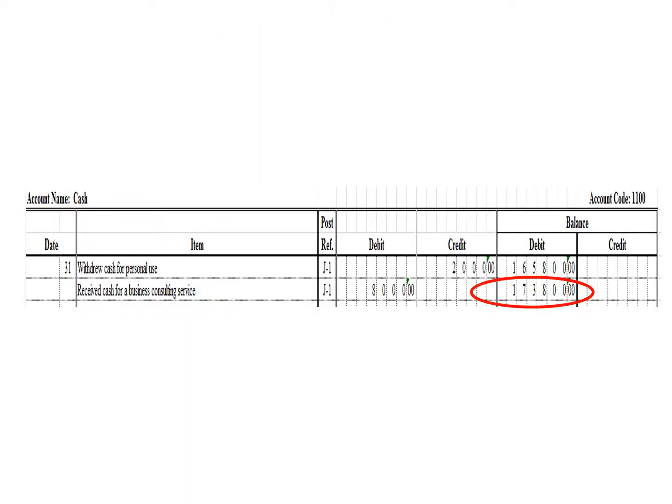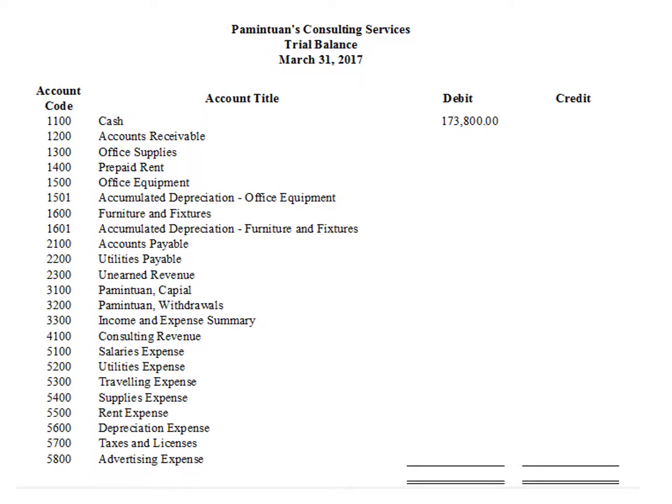To complete our trial balance, we need the balance of each account. Where can we get the balance of each account? Yes, correct — from their respective ledgers. Let us start with the cash ledger. As of March 31, the balance of the cash ledger is P173,800 debit. We write the corresponding balance of the cash ledger in our trial balance, which is P173,800 debit.